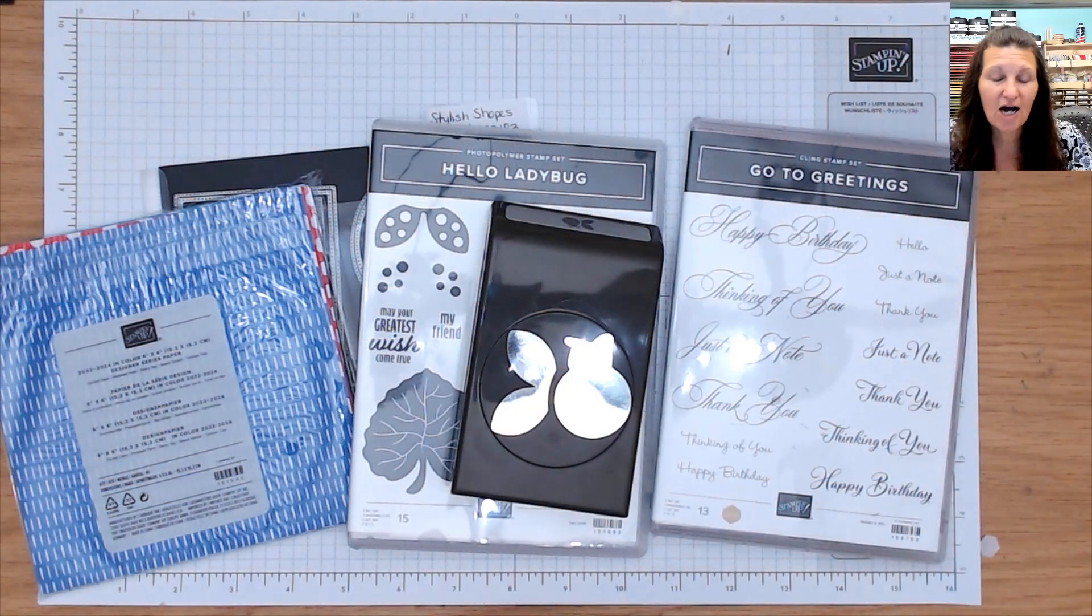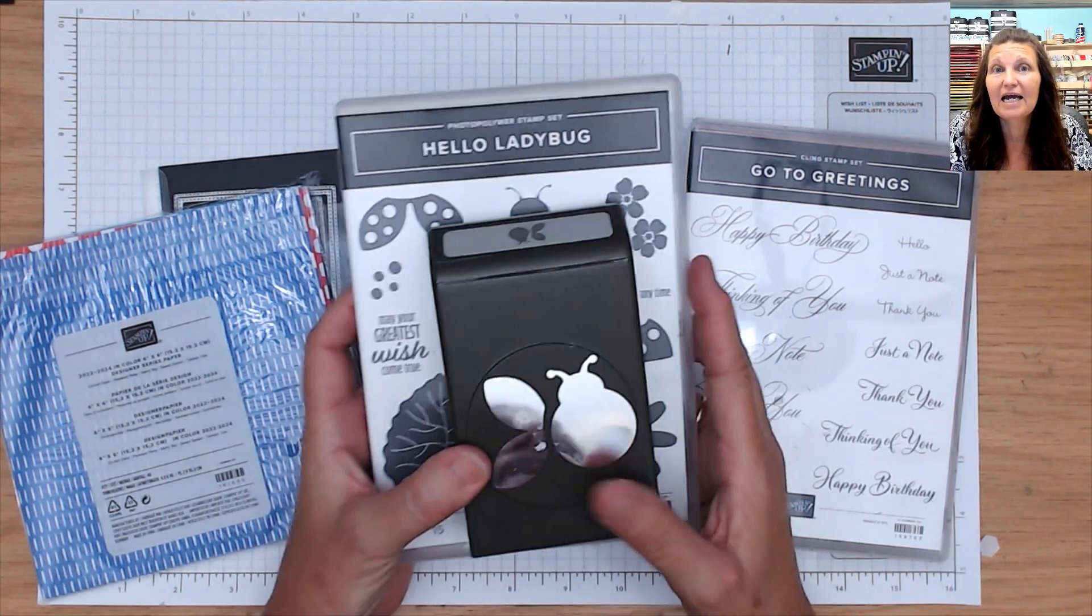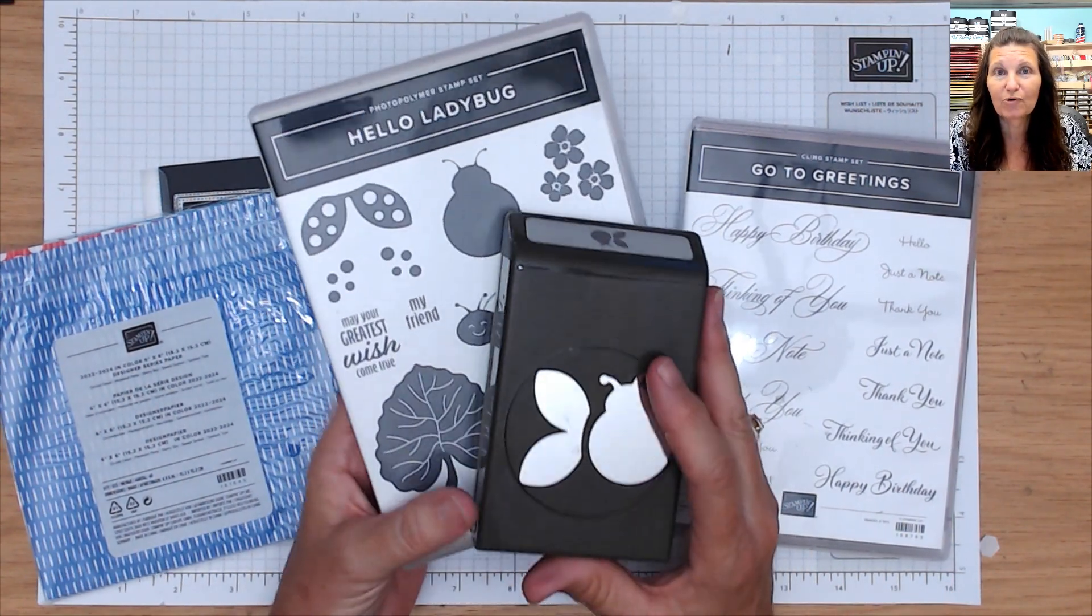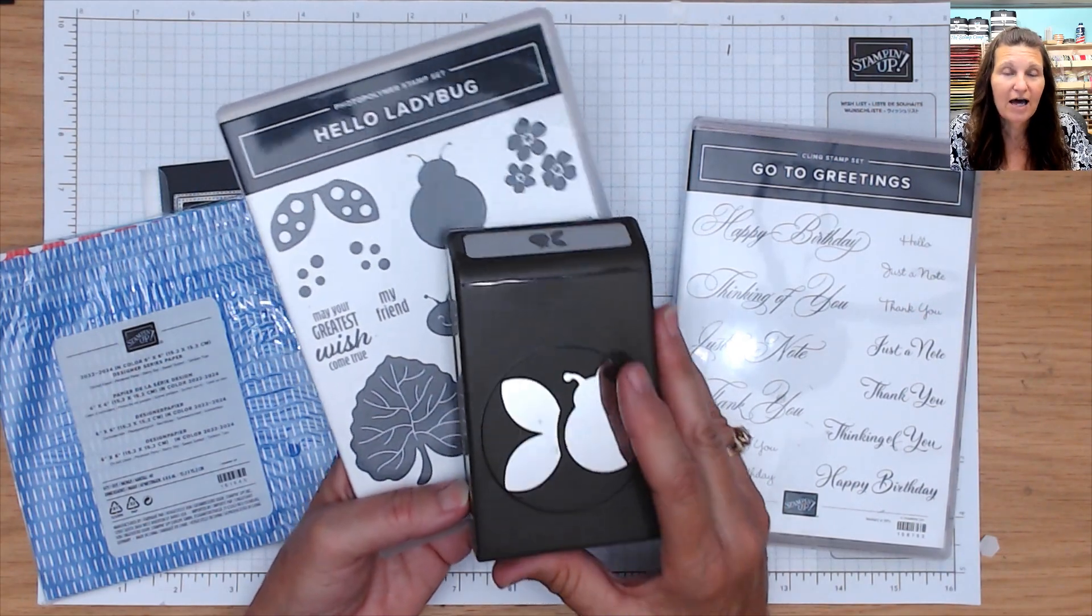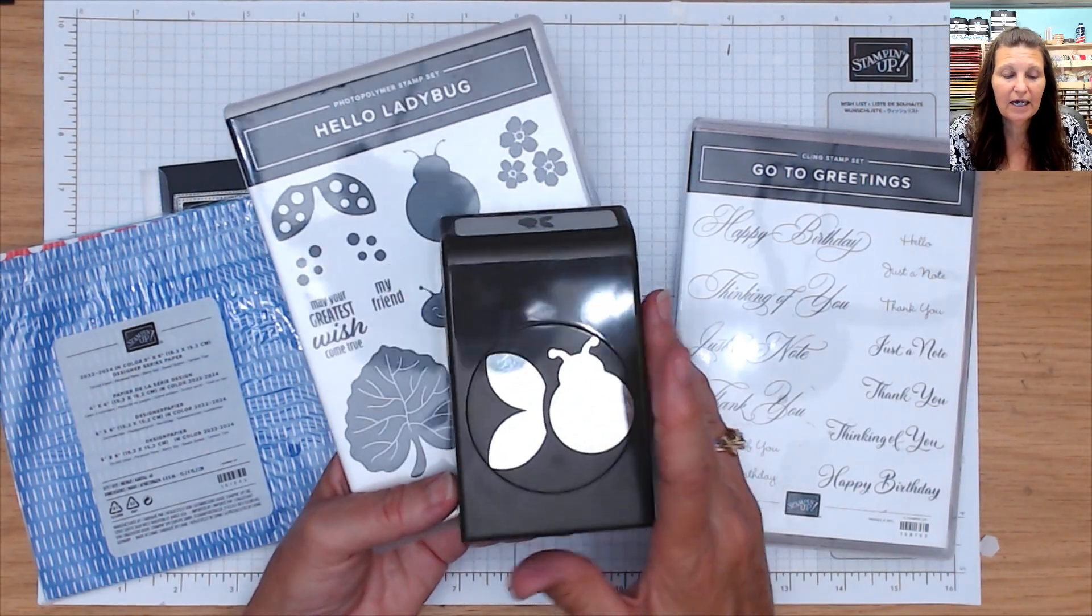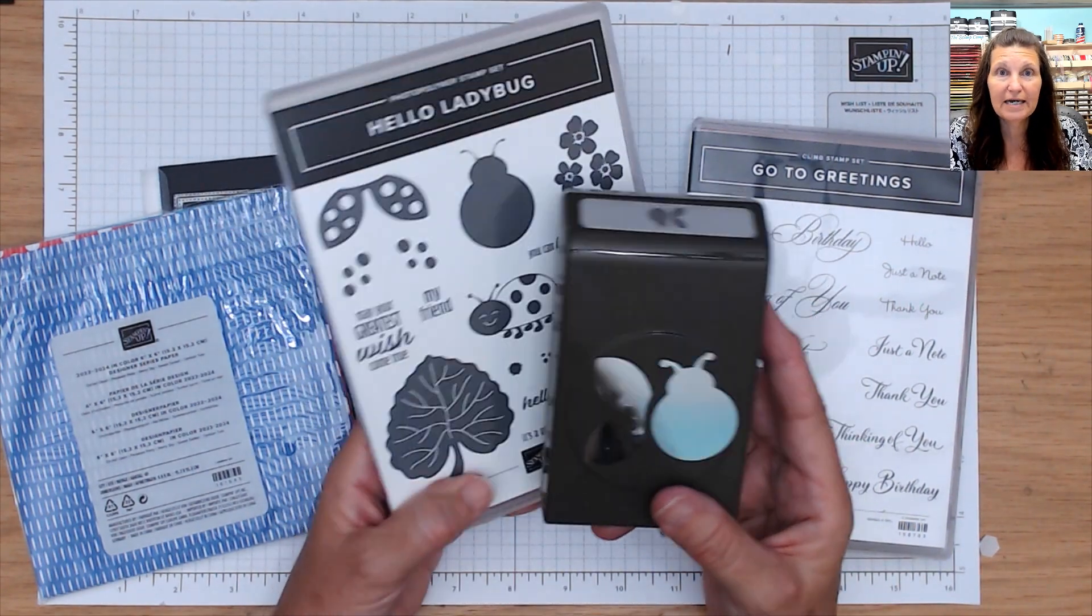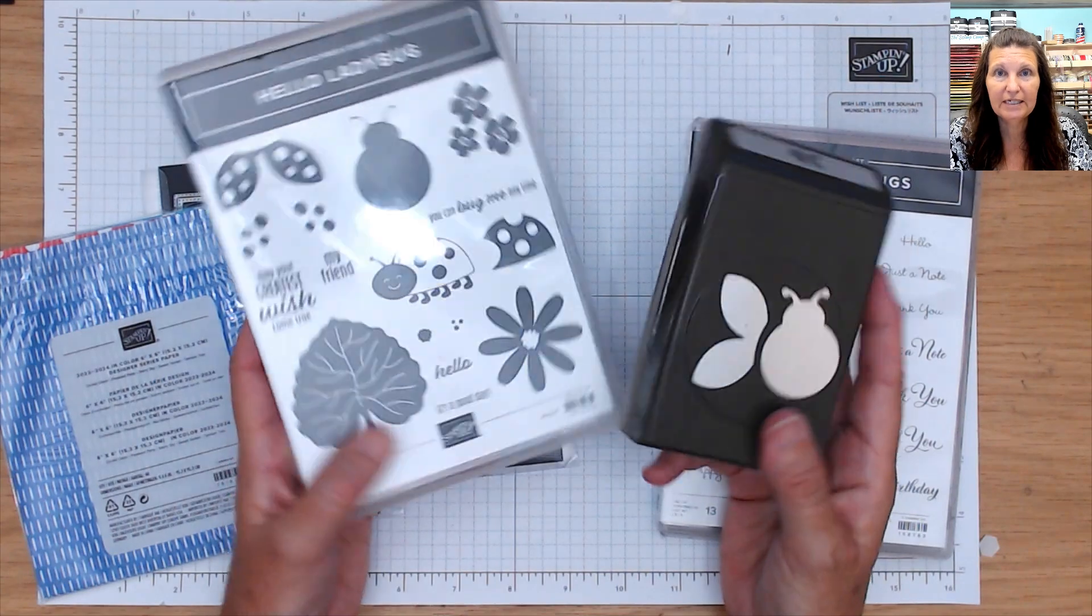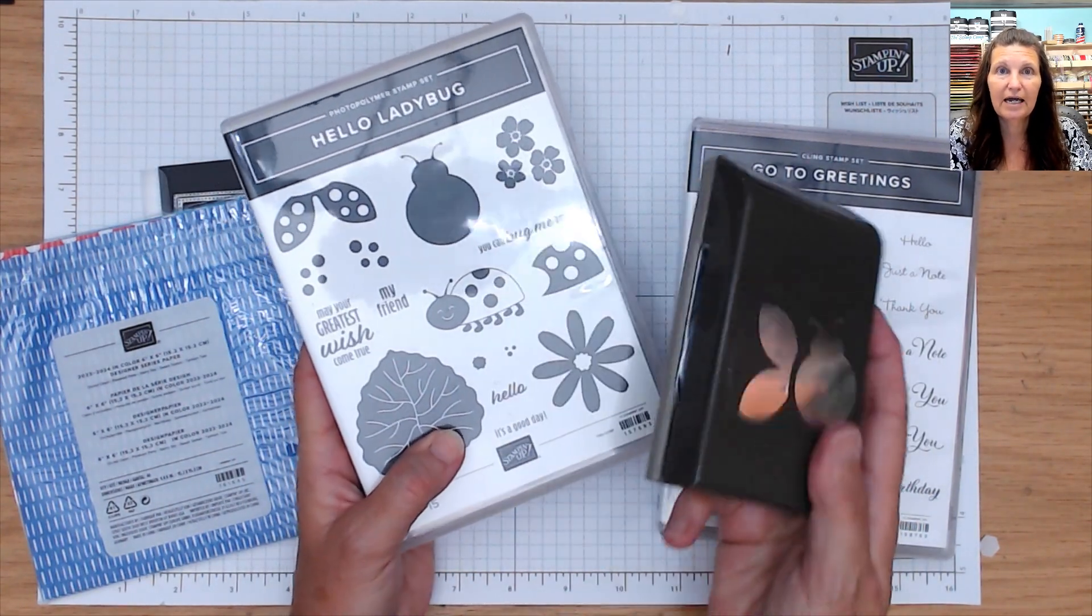Alright, so for today's cards, I'm going to be using an oldie but a goodie. It's still in the annual catalog, and I love that I bring back some stamp sets that you might already have on your shelf. This is the Hello Ladybug. It has the stamp set and a coordinating punch. Now they used to be sold in a bundle, but now they are separate. So if you don't have this bundle, you're going to need the stamp set and the punch.